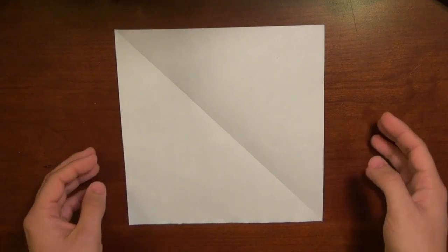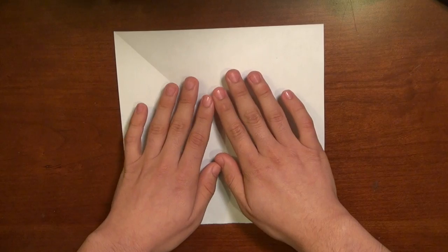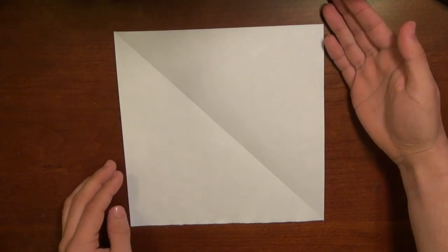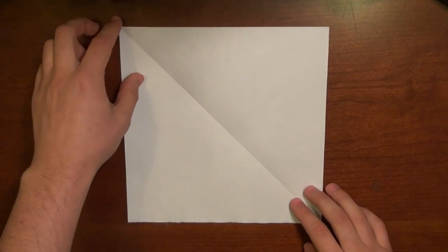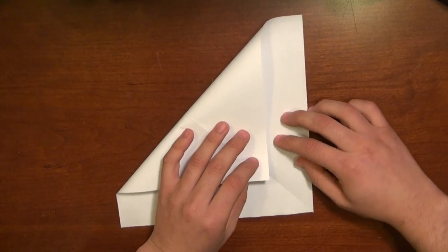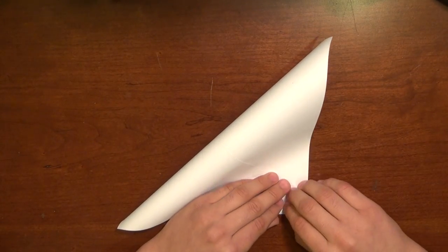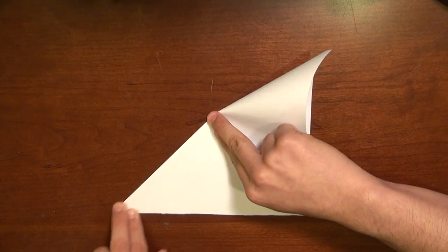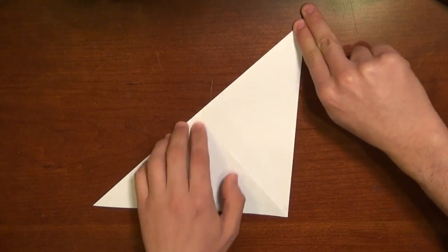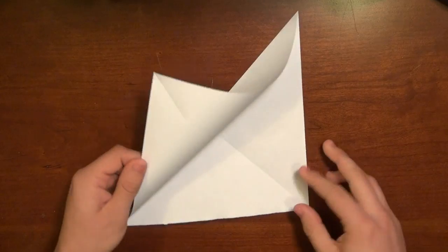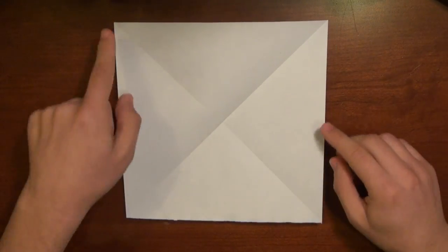If you're using origami paper, you want to have the colored side face up. Now that we have a crease going this way, I'm going to take the upper left corner and crease it across to the bottom right corner. Make a crease on that edge and you can open the paper and you'll see we have an X.